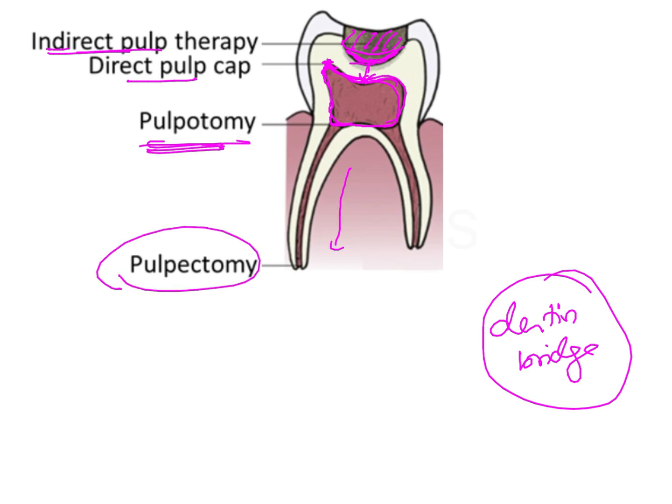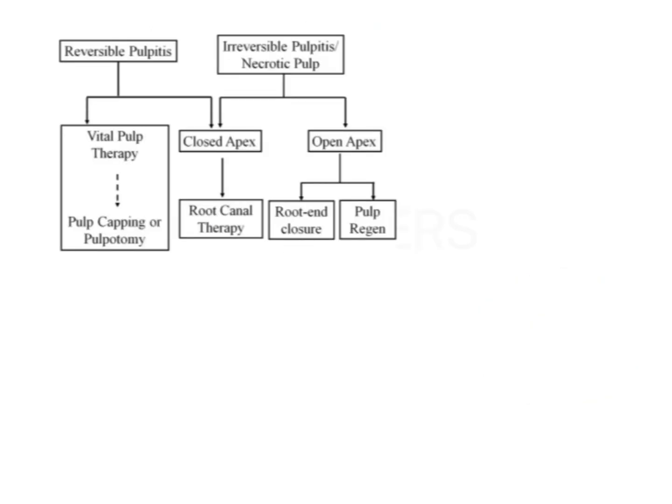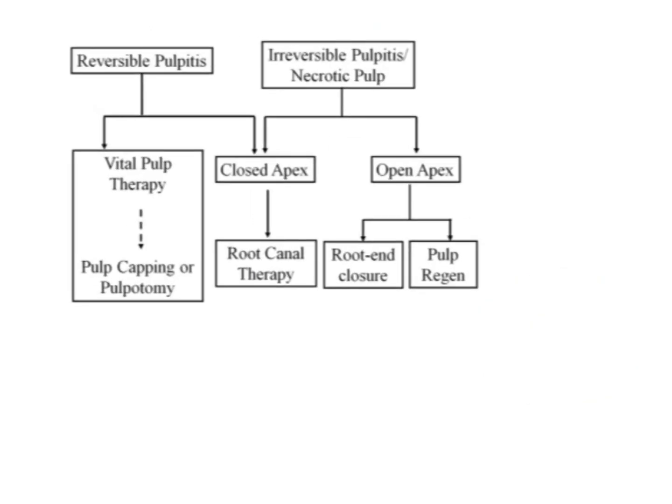In pulpectomy, this is similar to root canal treatment seen in permanent teeth, where the entire pulp tissue all the way to the root apex is removed. Apart from knowing what the different pulp therapies are, it is also important to know in which situation each is indicated.